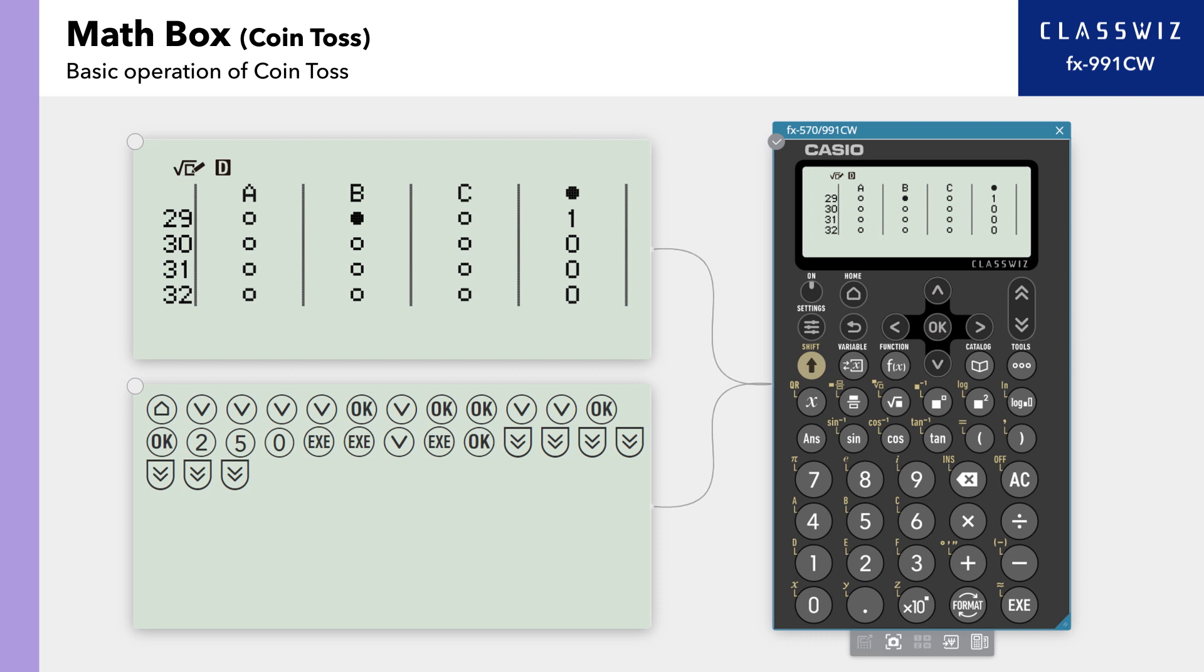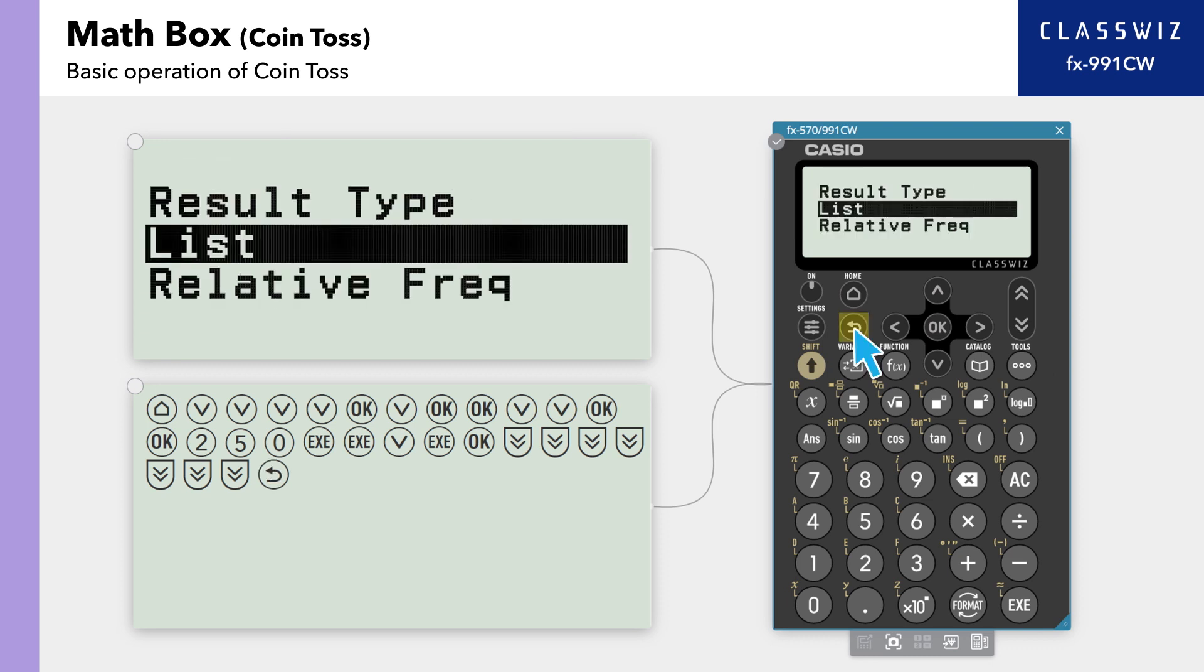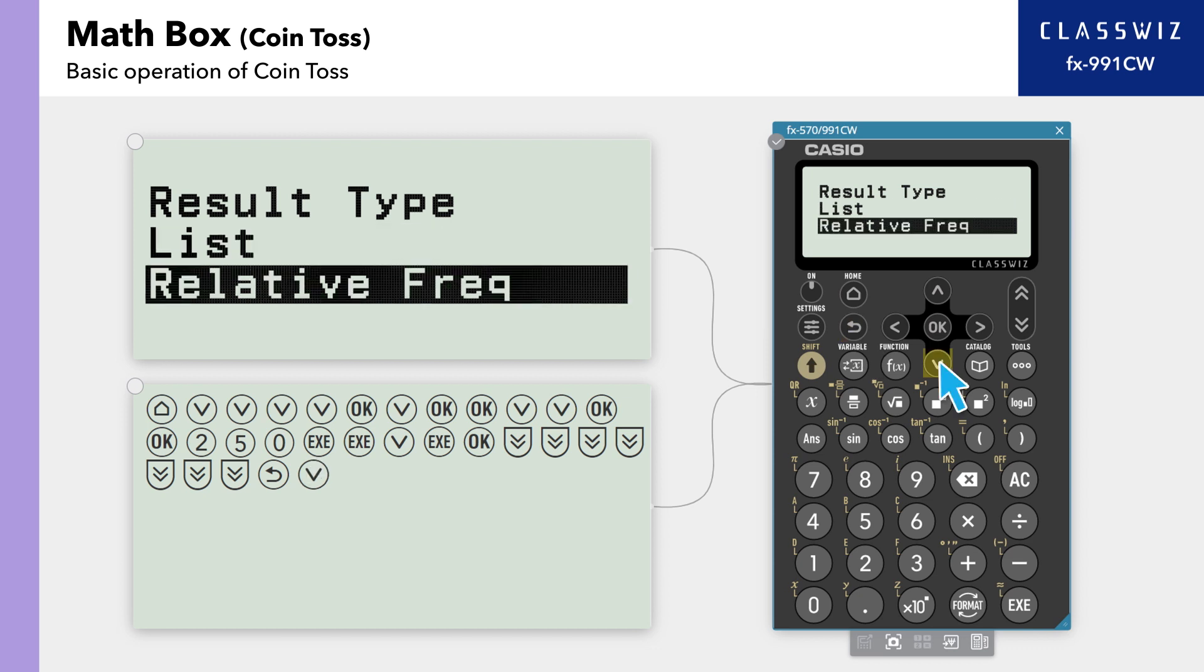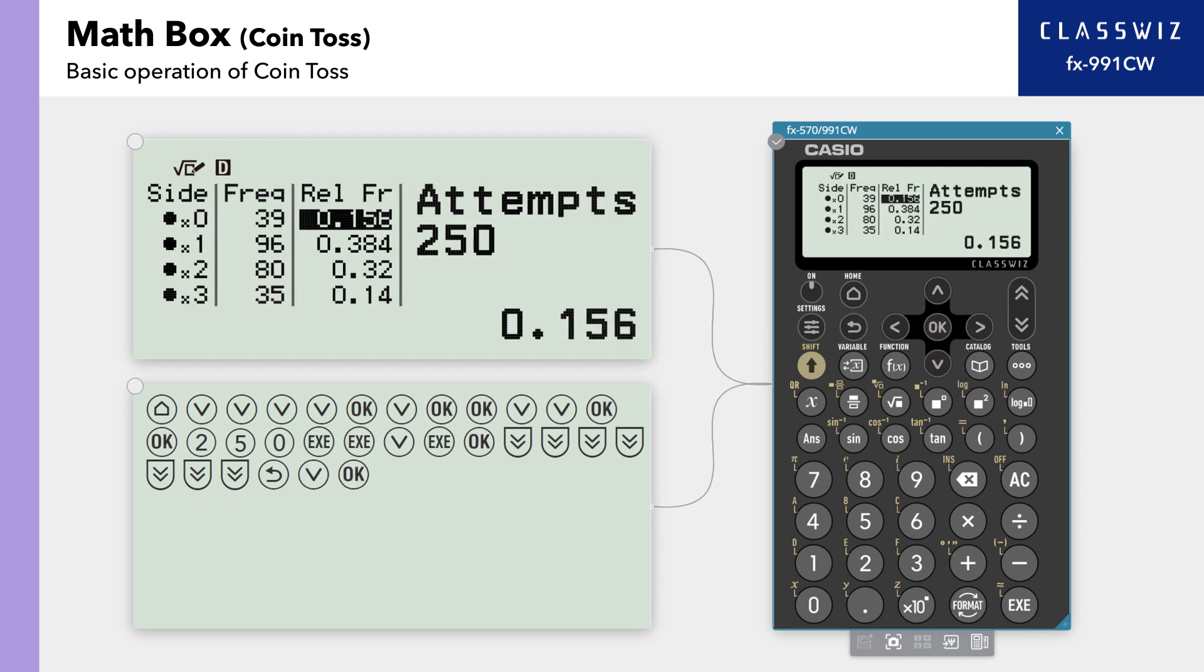To see the frequency and relative frequency from this list, press Back to Return to Result Type, then select Relative Frequency. The screen shows the frequency and relative frequency of heads when tossing three coins 250 times.